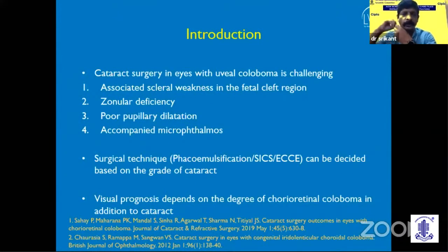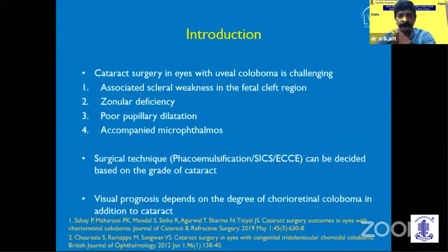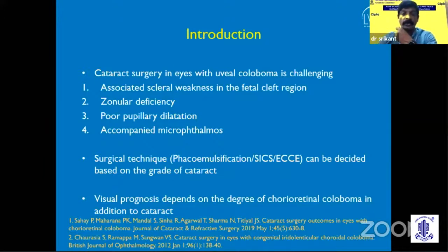The challenges are: one, there is clear zonular weakness at the cleft region. Two, there is zonular deficiency — you need to assess how much is the general deficiency. Most often there is a pupillary dialysis, and the pupillary dialysis is poor. It is most of the time also associated with many other things like microcornea, which we need to take care of.